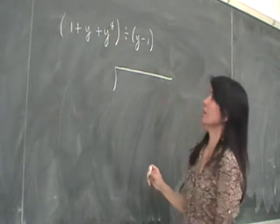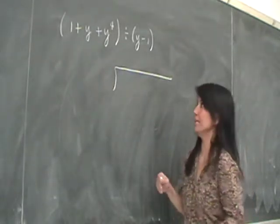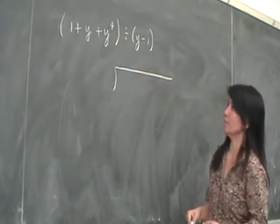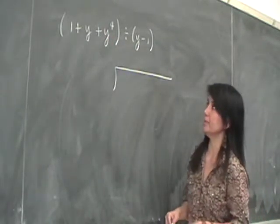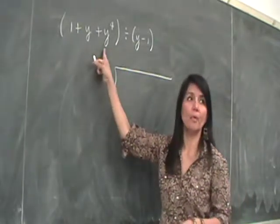So we know that before we put the dividend and the divisor in their spots, they both have to be arranged in descending order. Now the second thing I want to point out is not only do they have to be in descending order, but you should also see all the powers of y.